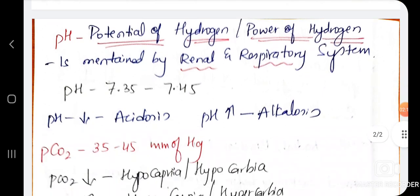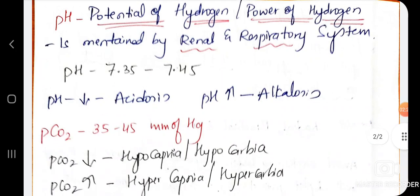Then coming to pH. So what is pH? Potential of hydrogen. Atwa power of hydrogen. Atwa it is maintained mainly by renal and respiratory system. So what is the normal pH? 7.35 to 7.45. Okay. pH kadme adhre na avu akondition gain anta karithi vi. Acidosis. pH jasthi adhre alkalosis anta karithi vi. So next one.